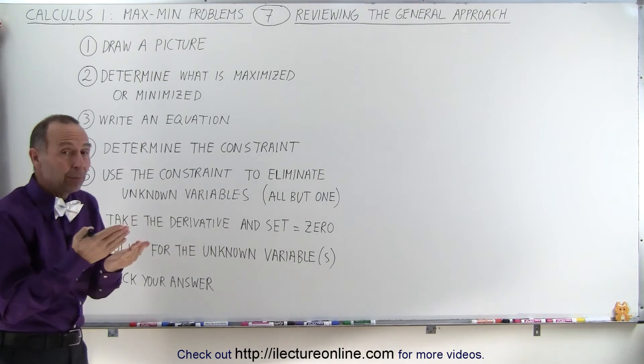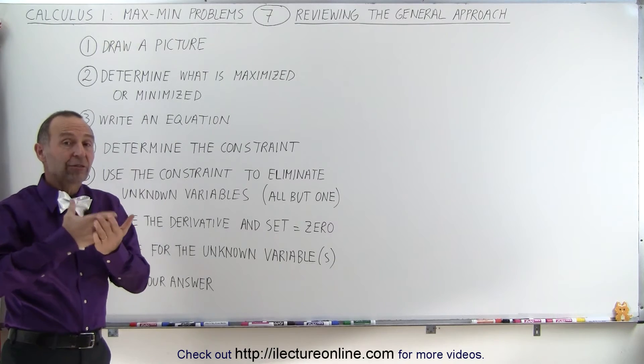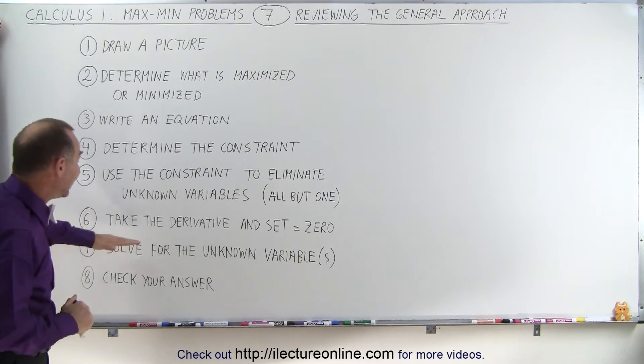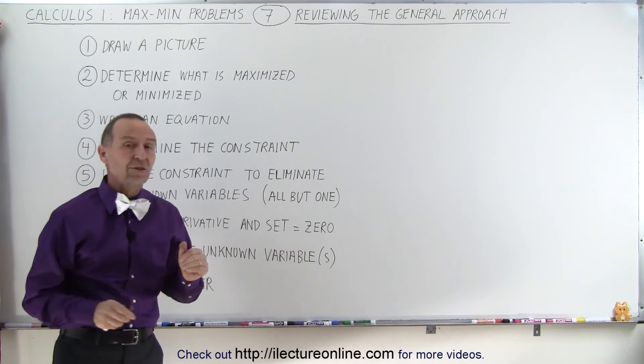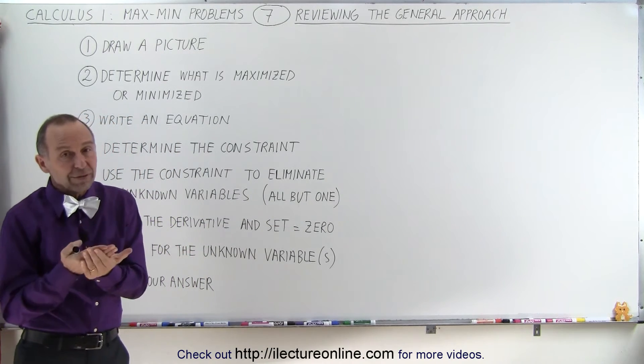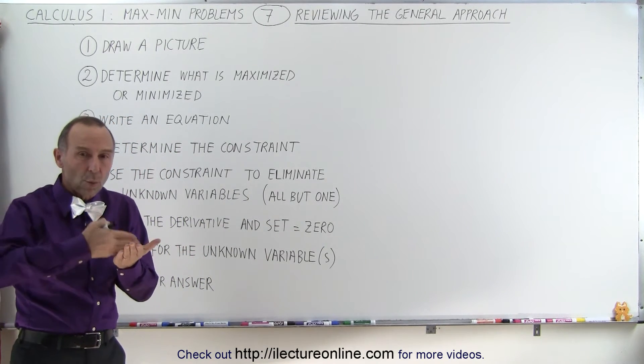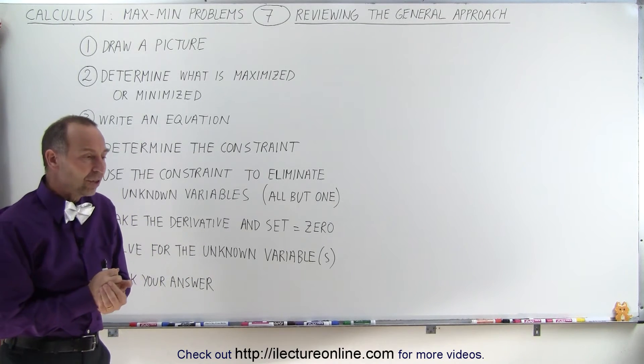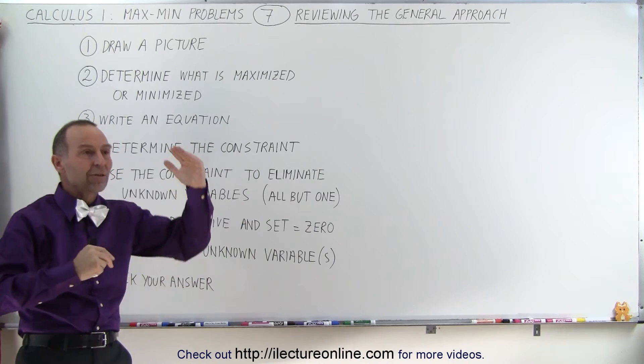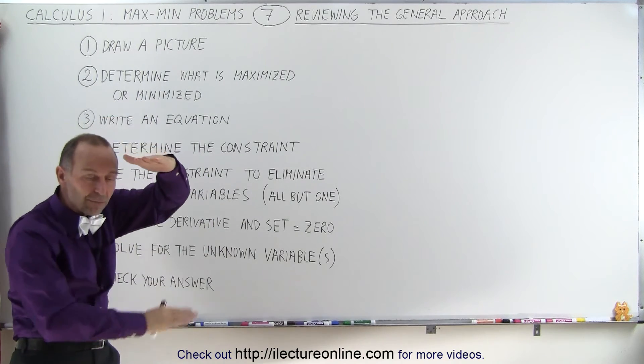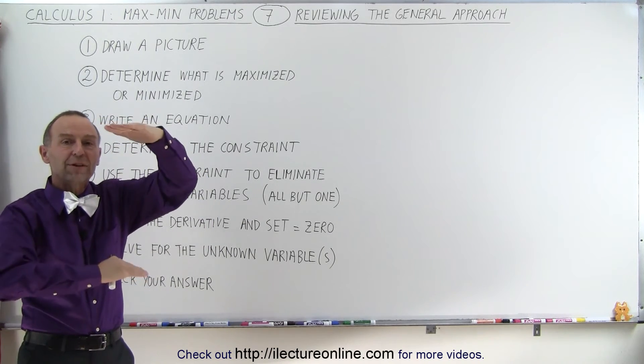Once you have an equation set up where you have the equation as a function of a single variable, then you can take the derivative of that variable and set the derivative equal to zero. When you take the derivative, that is an indication of where and how the function changes. When you reach a maximum value or you reach a minimum value, that's where the derivative is equal to zero.